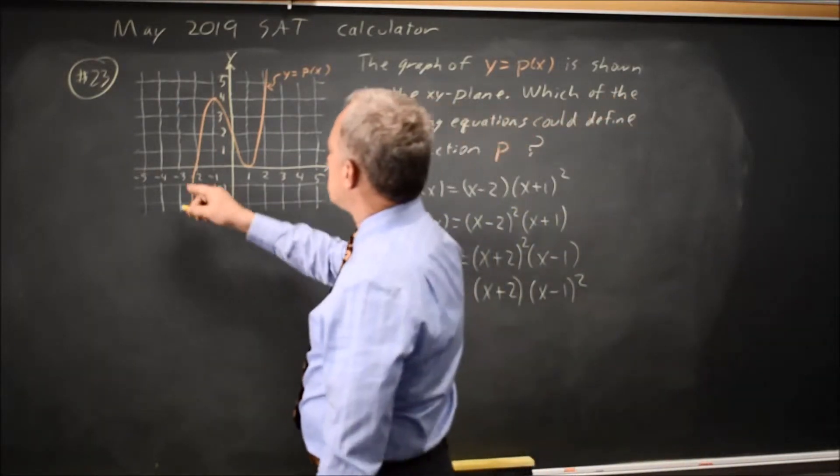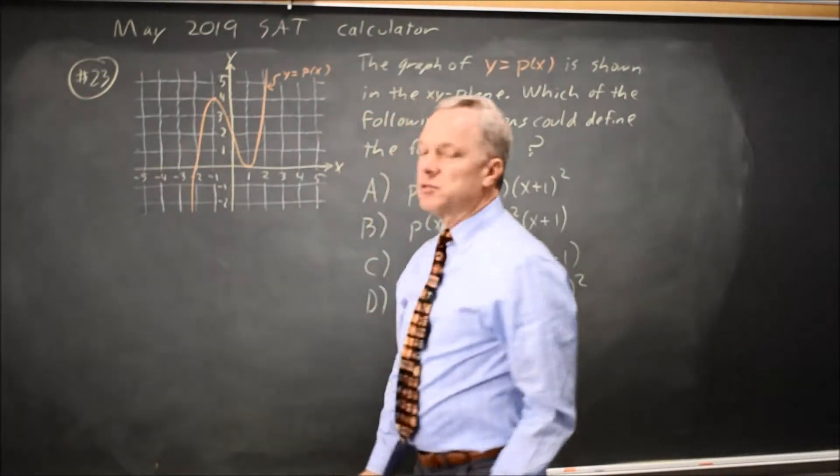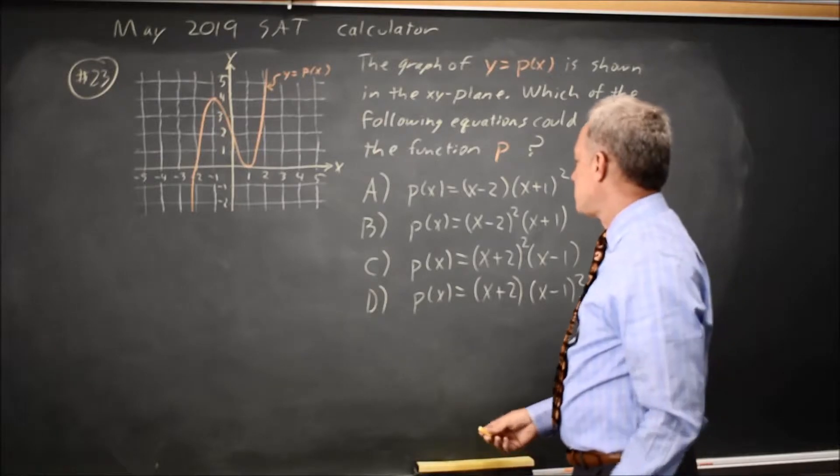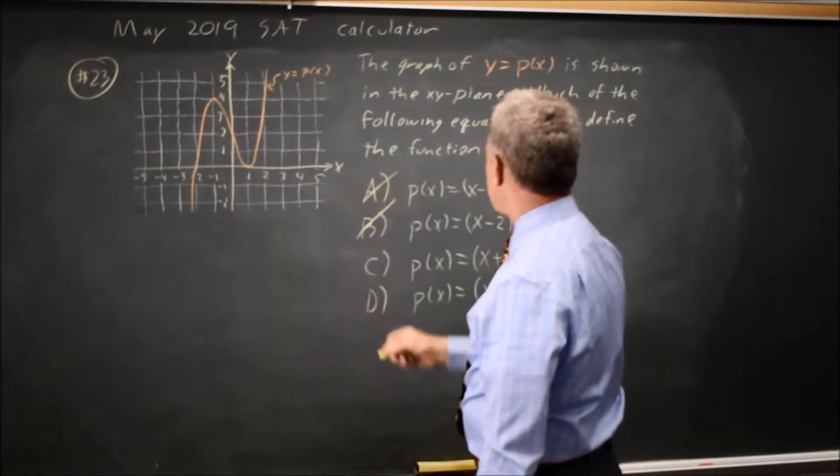You know that negative 2 is a zero, so x minus negative 2 is a factor. That would be x plus 2, meaning choices A and B are wrong.